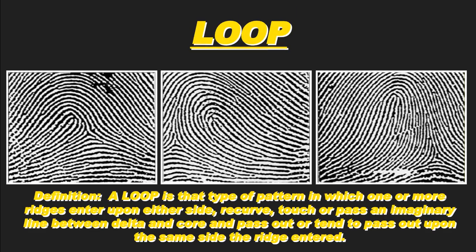This is the first of two videos covering the requirements for classifying fingerprints as loops. Looking at these three fingerprints, we can see clear representations of what would be considered loops. If you remember from earlier videos, there are three primary fingerprint patterns: arches, loops, and whorls. About 65% of all fingerprints are loops, so it's important that we understand how to identify a loop.